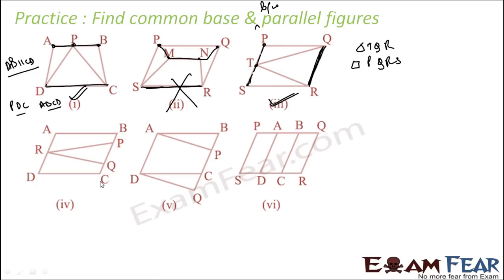Practice problem 3: we have triangle PQR and quadrilateral ABCD. There is no common base at all — triangle PQR has one base and ABCD has a different base. Since there is no common base, there is no question of being between parallel lines.